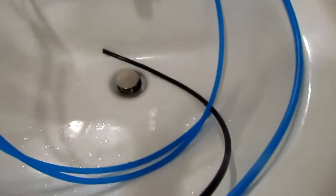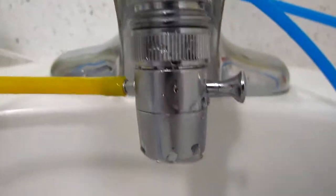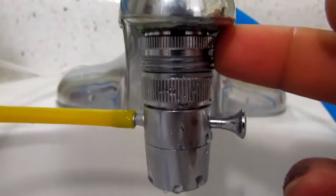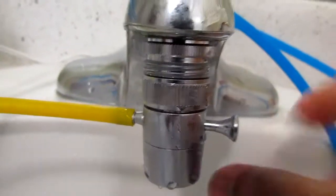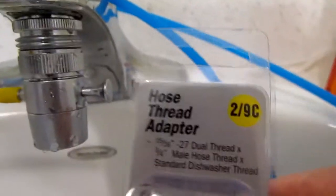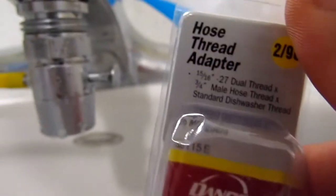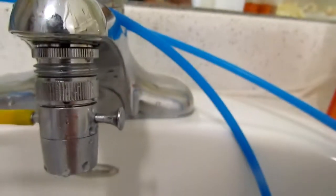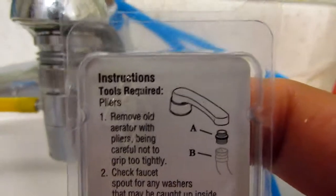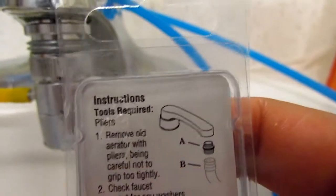Alright, so we have two things. First one at the top, that is a hose thread adapter, it's right here. Take a good look. If you turn it around it shows you that basically, that's what it looks like, letter A, that's what it looks like.